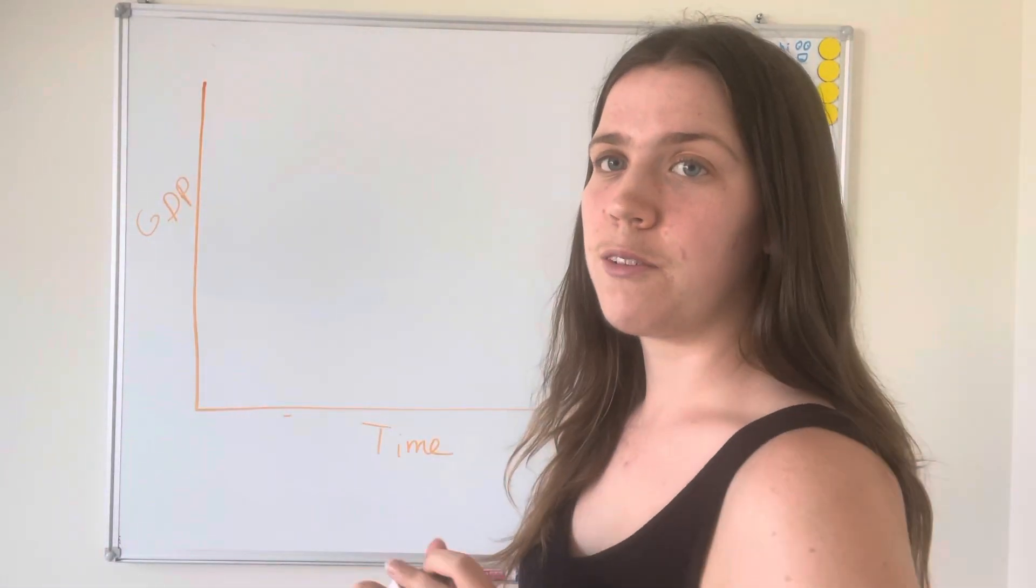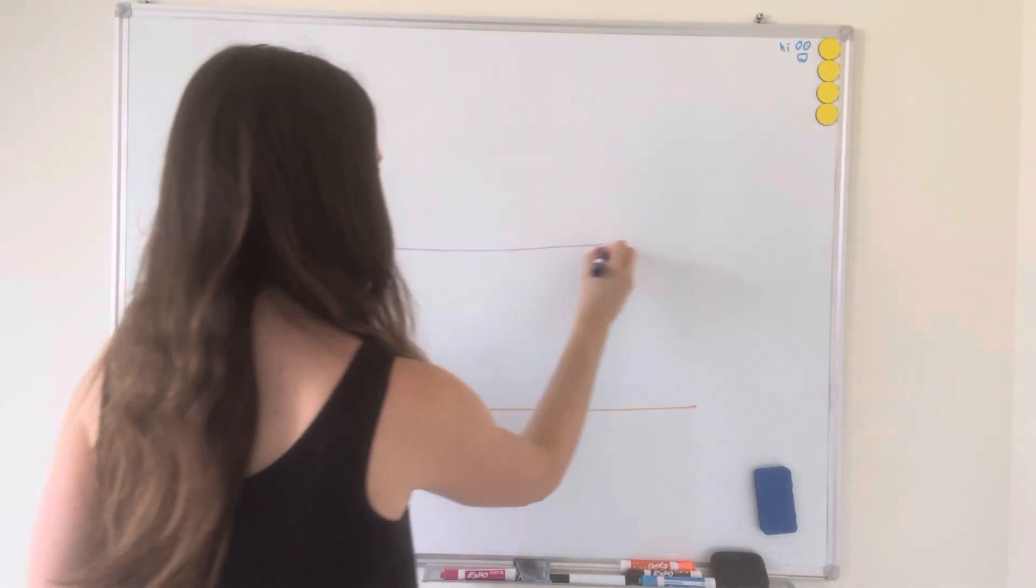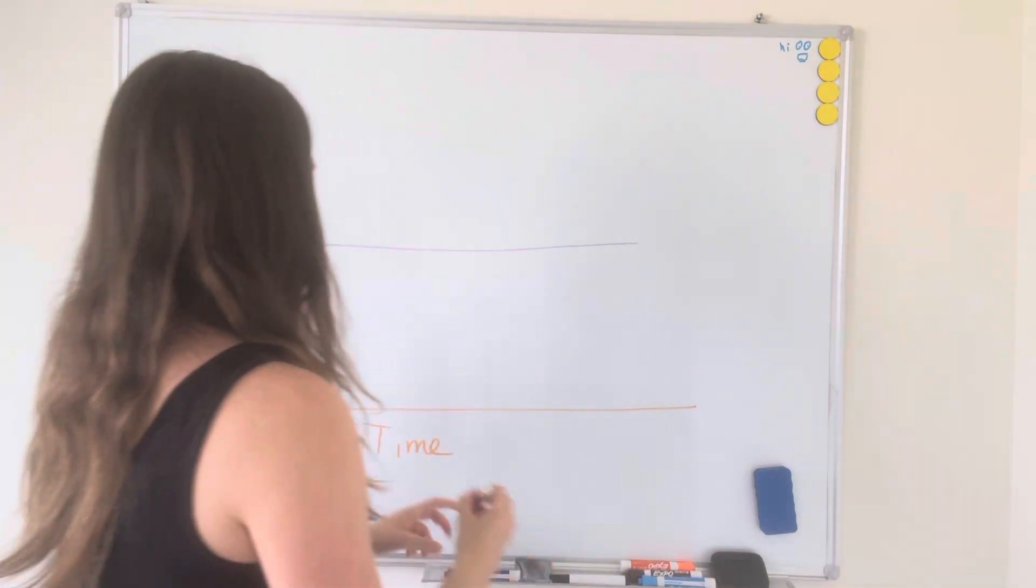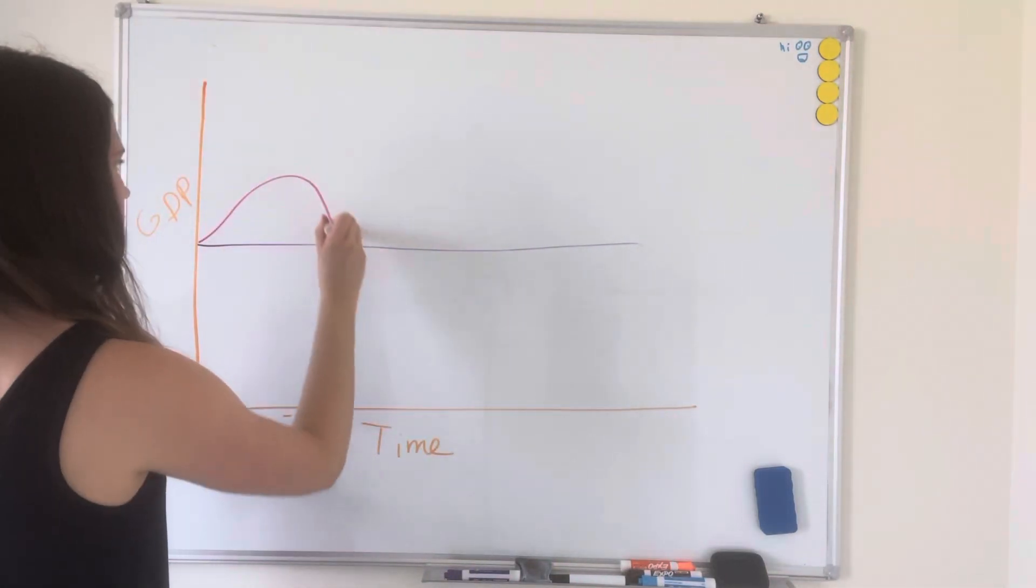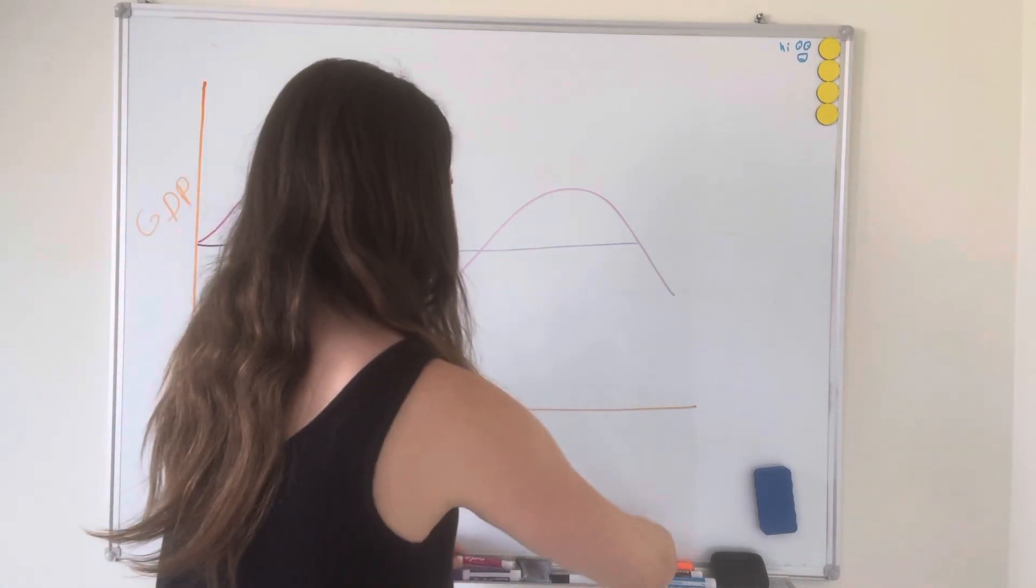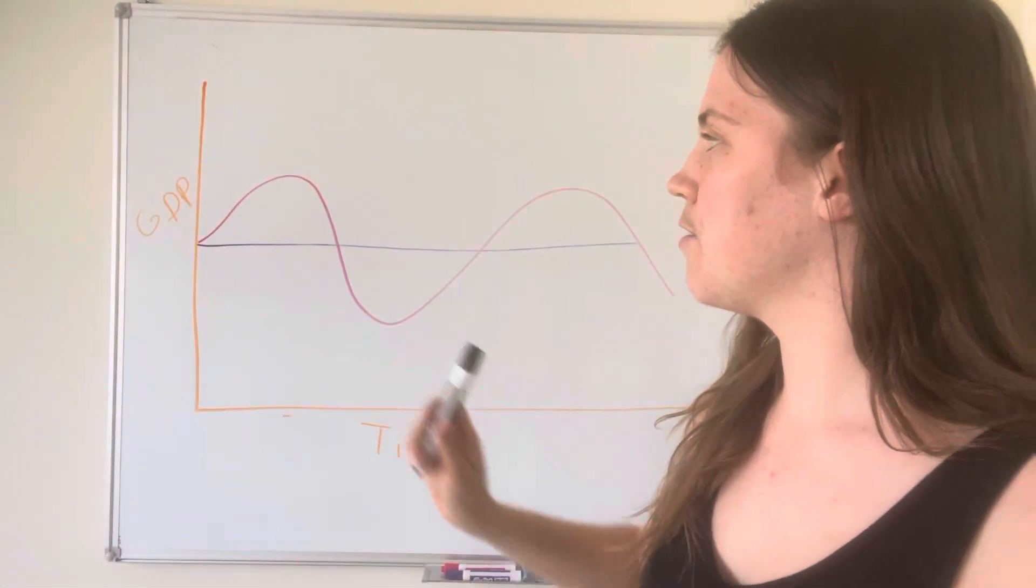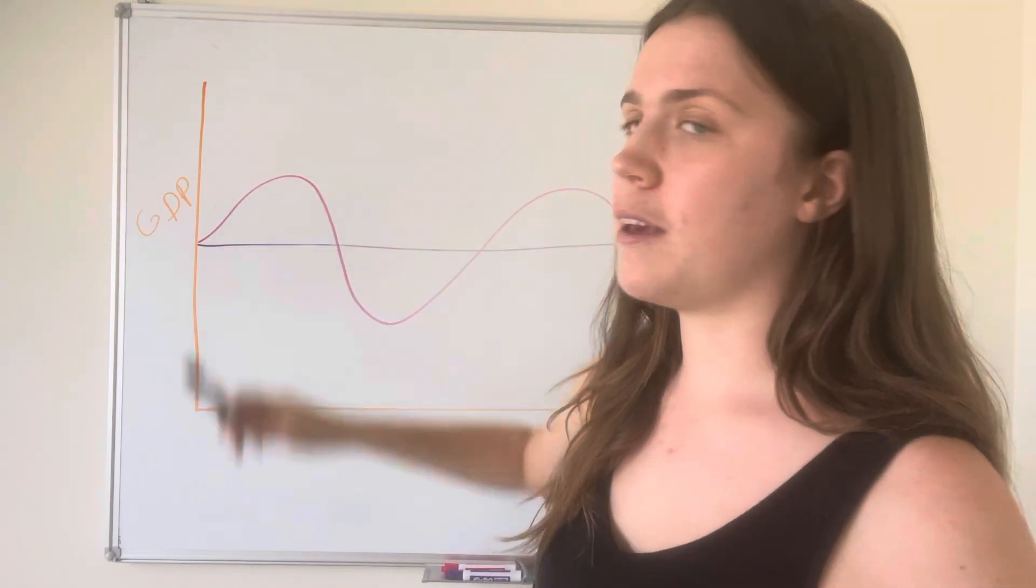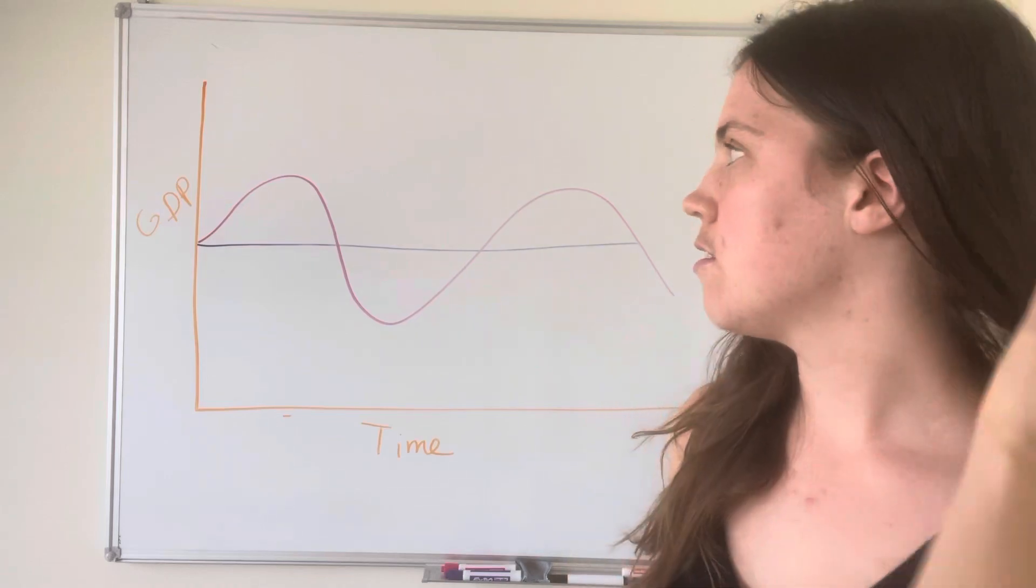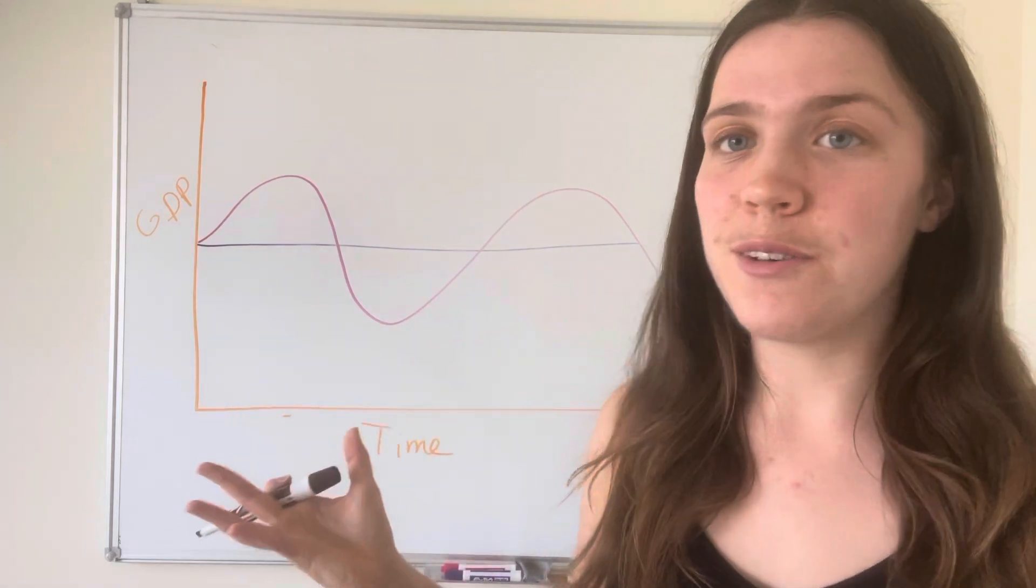All right and I'm going to do a growth trendline in purple. So the first thing you see our graph doing is rising in GDP over time, and so what that is called is an expansion. And this is usually from the period of time from either a couple years to a whole decade.